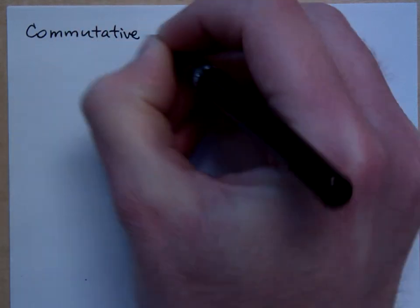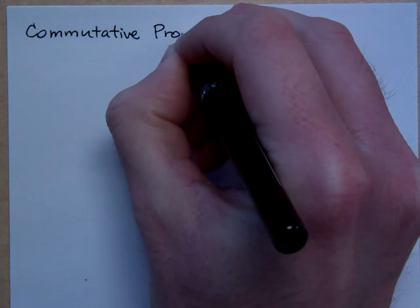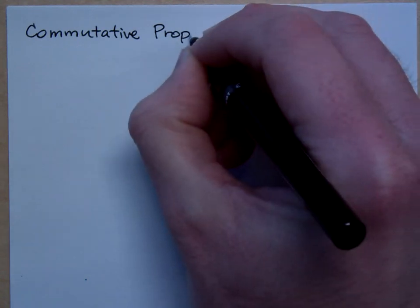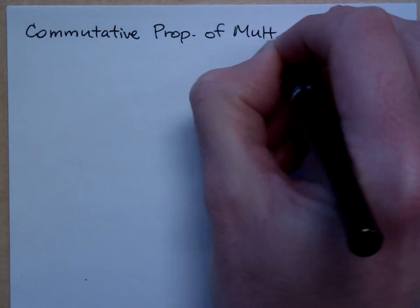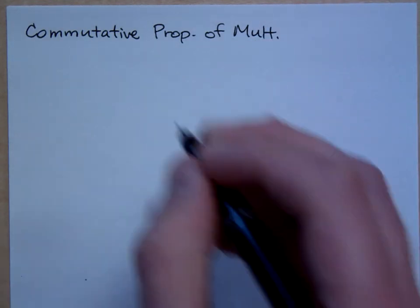And this opens up so much to us. Now, when we had addition, we talked about the commutative property of addition. But there is a commutative property for multiplication as well.